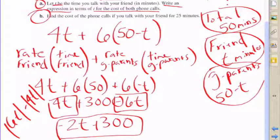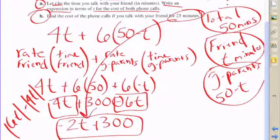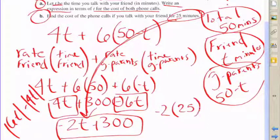This is the expression in terms of t that represents the cost of both phone calls. Negative 2t plus 300, so we've answered that part. Part b asks you to find the cost of the phone calls if you talk with your friend for 25 minutes.